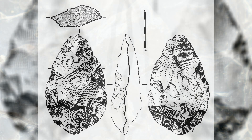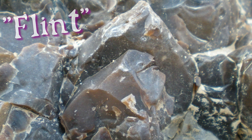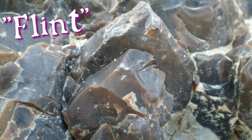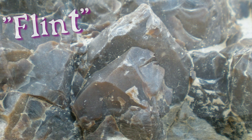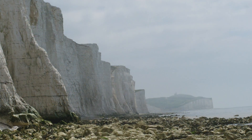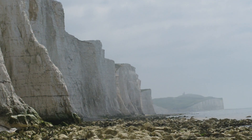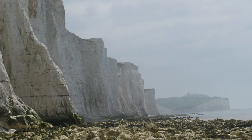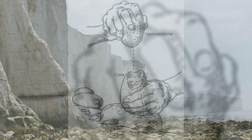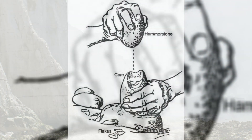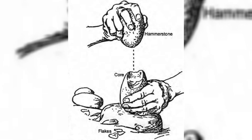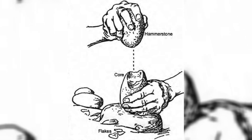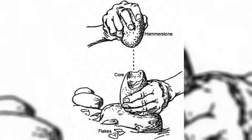Stone tools are usually made out of a very particular stone: flint. Flint is a relatively common stone, especially in parts of southern Britain. It's often found along with chalk. Flint is special because when you hit it, it tends to break into pieces with very sharp edges. These are excellent for making stone tools.